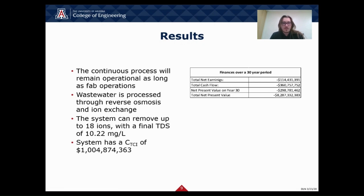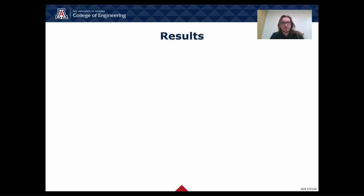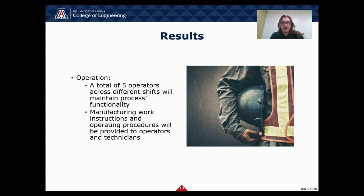To continue our results, the continuous process will remain operational as long as the fab operates. Wastewater from the semiconductor rinsing process will be processed through reverse osmosis and ion exchange. The system can remove up to 18 different ions, with a final total dissolved solids of 10.22 milligrams per liter in our product stream. The system has a total capital investment of just over a billion dollars, and on the table to the right you can see our finances over a 30-year period. For our operation, a total of five operators across different shifts will maintain the process's functionality. Manufacturing work instructions and operating procedures will be provided to the operators and technicians.